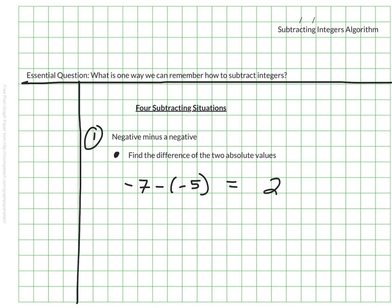And it would be negative 2, because if I'm moving up the number line 5 spaces to the right, it won't cause us to cross 0. We will still be in negative territory.